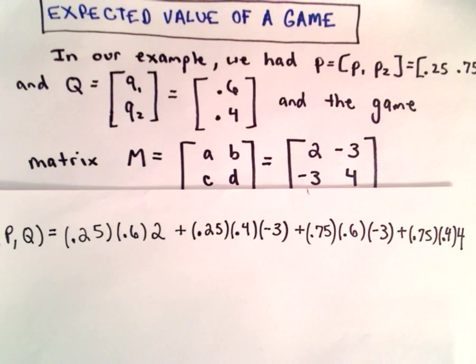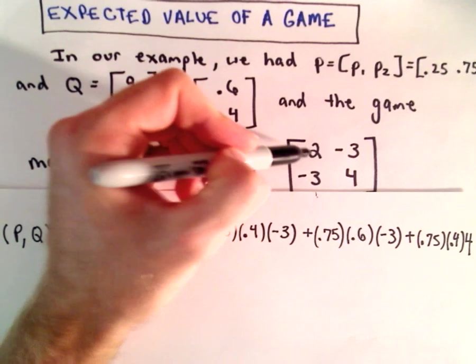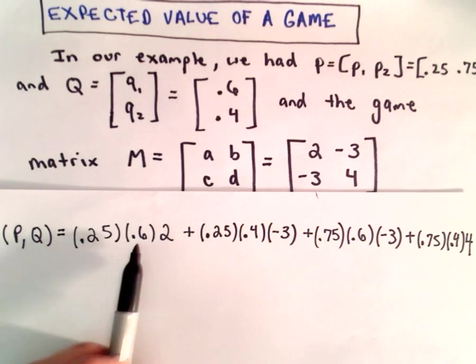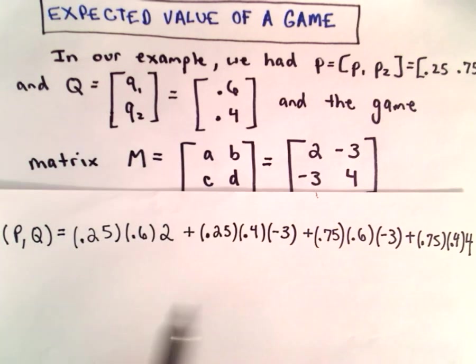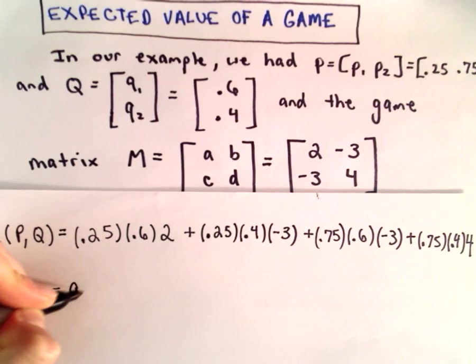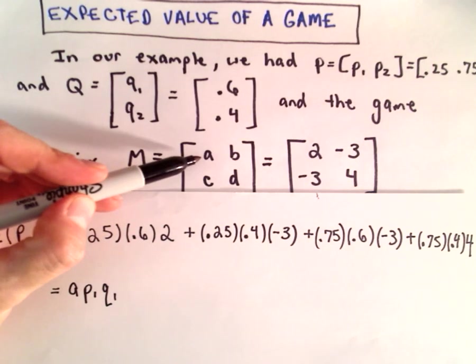So that's going to give us the expected value of our game here. All we're doing is we're just taking each payoff and we're multiplying it by the probability that that entry will be selected. And since those are independent, that's why we can just simply multiply the respective probabilities.